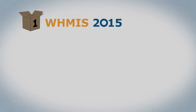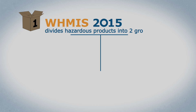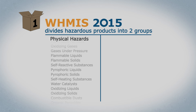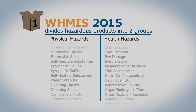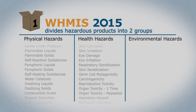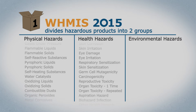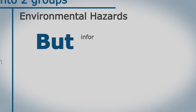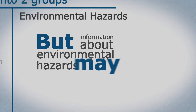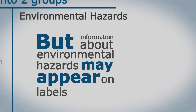Number one: WHMIS 2015 divides hazardous products into two groups — physical hazards and health hazards. There is a third group, the environmental hazards group, that has not been adopted. But information about environmental hazards may appear on labels and safety data sheets.